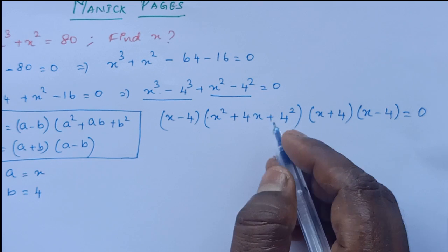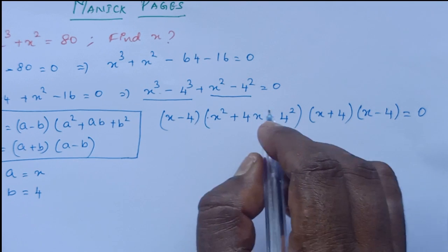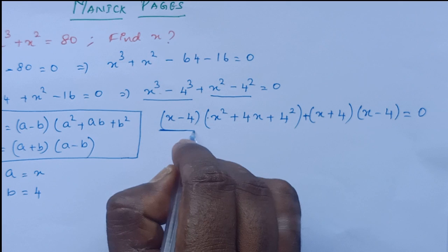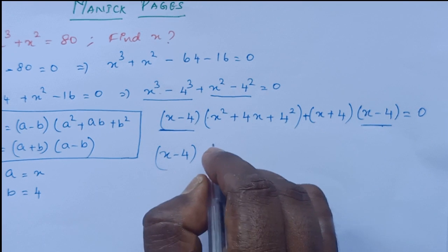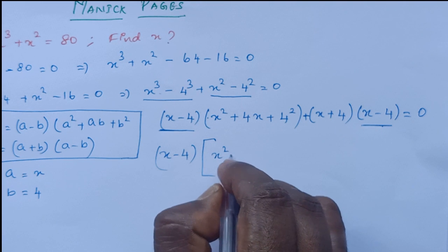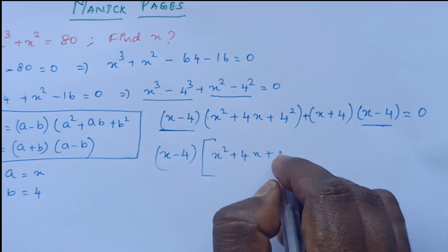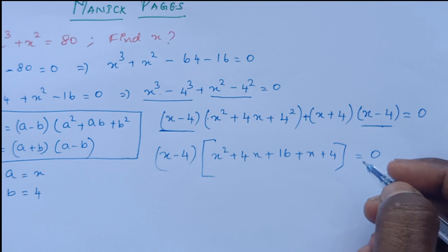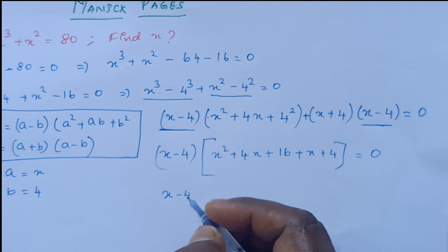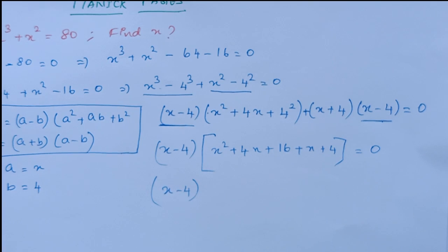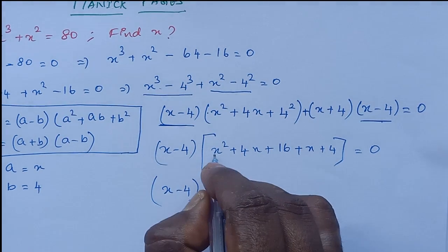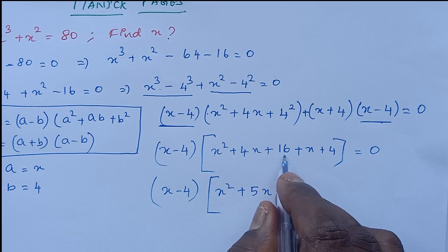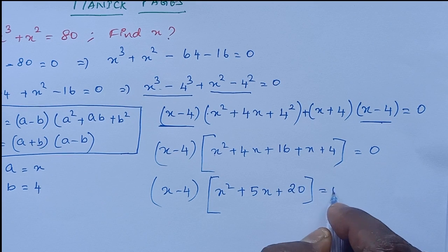So x minus 4 is common here. Here we have x minus 4, and here x minus 4. So we take that commonly outside. We end up with x square plus 4x, with 4 square being 16, plus this part x plus 4, equal to 0. So x minus 4 is factored outside. Now x square plus 4x plus x equals 5x, plus 16 plus 4 equals 20, which is equal to 0.